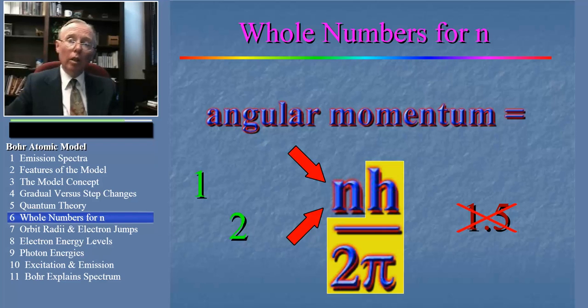Now your professor may want to go into more detail than this, but the important point to remember is that the size of the electron orbit and its energy are quantized, because n can only have values that are whole numbers.